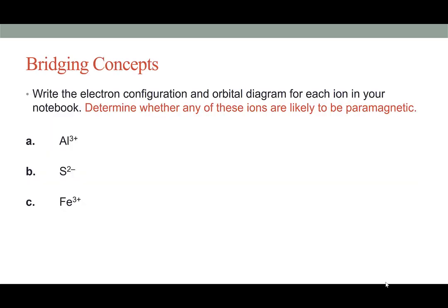To sum up this unit, we can take what we've learned about electron configurations and orbital diagrams and link them to this concept of paramagnetism. Here are three ions you can use as examples. Figure out what their electron configurations would be, sketch their orbital diagrams, and ask the question: are any of these ions likely to be paramagnetic? All right, have fun with it. I'll see you next time.